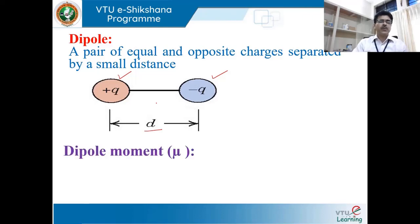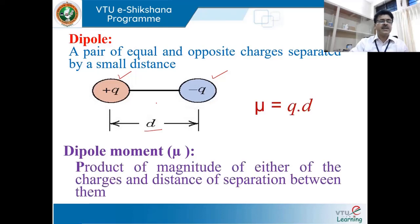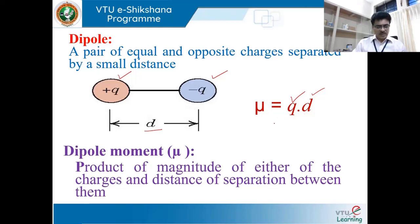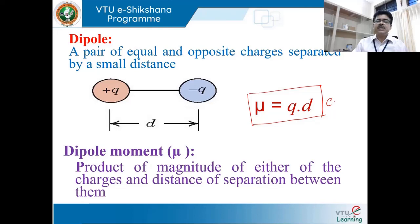The strength of a dipole is calculated using a physical quantity called the dipole moment, represented as μ. The dipole moment is the product of the magnitude of either charge and the distance of separation between them: μ = q × d. Here q is measured in coulombs and d in meters, so the unit of dipole moment is coulomb·meter.